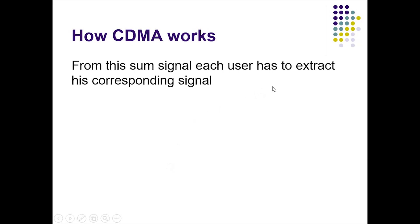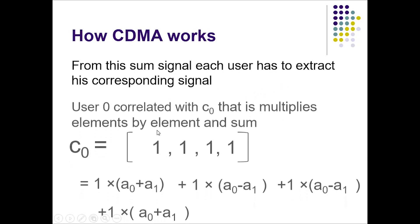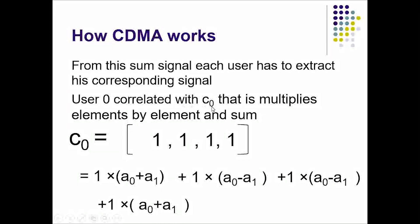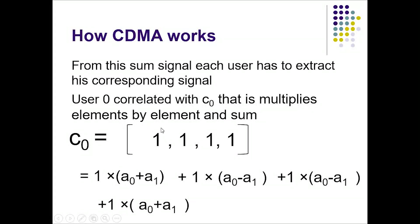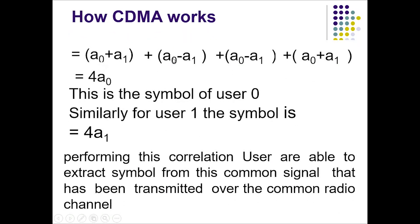From the combined signal, each user has to extract their corresponding signal. User 0 correlates with c0 — that is, multiplies element by element and sums. We know c0 = [+1, +1, +1, +1, +1]. We multiply the combined signal with this code. Through the calculation we get 5×a0 for user 0 — this is the symbol of user 0. Similarly, for user 1, the result is 5×a1. Performing this correlation, users are able to extract their symbol from the common signal transmitted over the common radio channel.